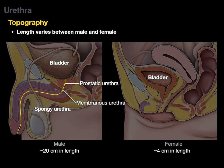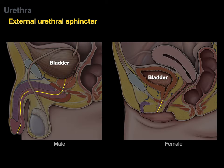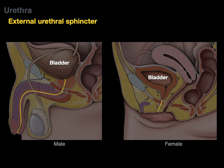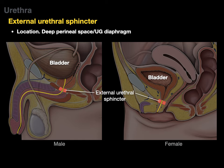The female urethra is about four centimeters in length — much shorter — which is one reason why urinary tract infections are more common in females, as bacteria have a shorter distance to travel. The external urethral sphincter, located in the urogenital diaphragm — also called the deep perineal space — is a skeletal muscle that voluntarily contracts to allow or prevent urination.